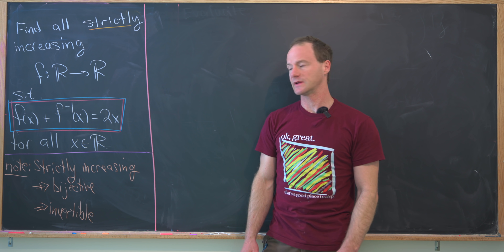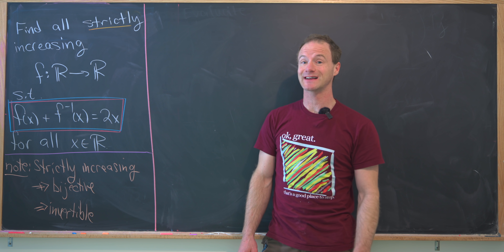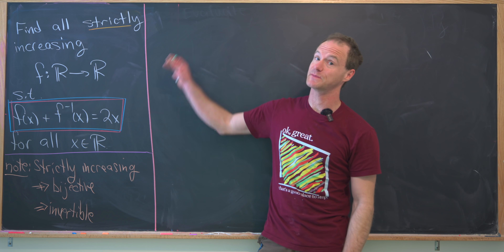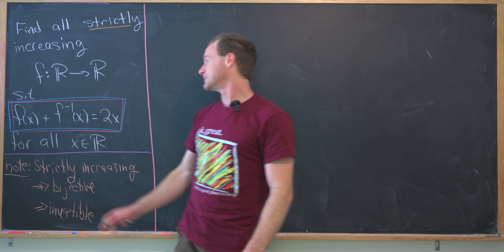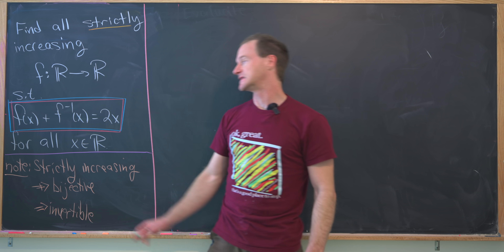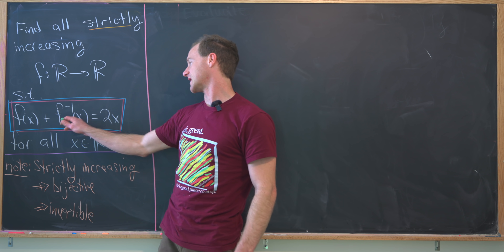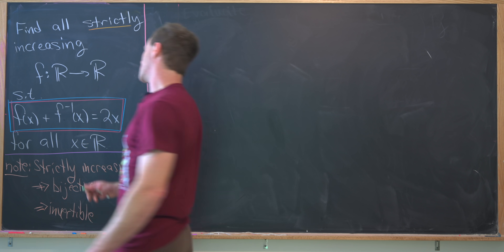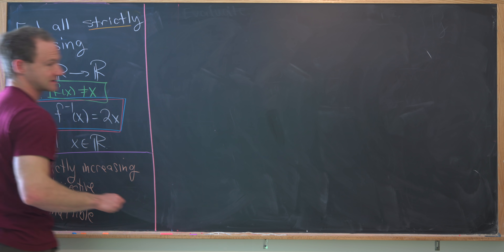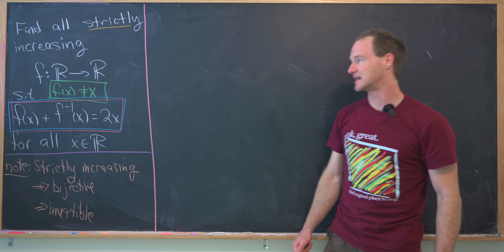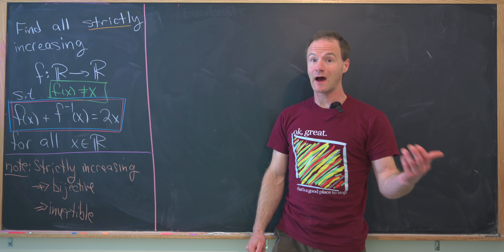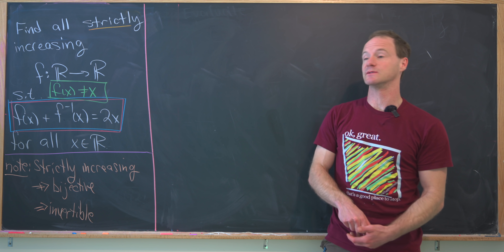Before we really get into it, notice that the very simple function f(x) = x most definitely satisfies this condition. It's strictly increasing and its inverse is itself, so f(x) plus f inverse of x is x plus x, which is 2x. So we might as well assume from the beginning that f(x) is not equal to x — that f is not the identity function — and now we're going to build some other solutions.